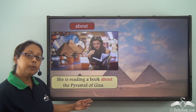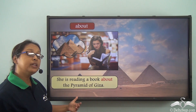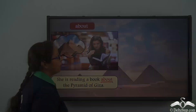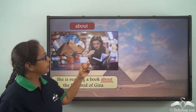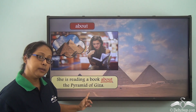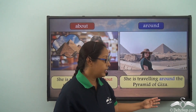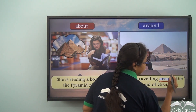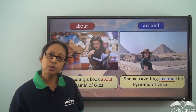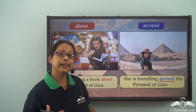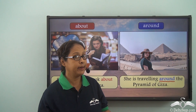She is reading a book about the pyramid of Giza. The preposition here is 'about,' meaning she is reading a book which is on the subject of the pyramid of Giza. She is travelling around the pyramid of Giza. Here the preposition is 'around,' meaning she is travelling the area surrounding the pyramid of Giza — in and around it.